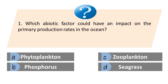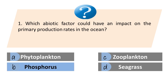Example: Which abiotic factor could have an impact on the primary production rates in the ocean? A. Phytoplankton. B. Phosphorus. C. Zooplankton. D. Seagrass. The answer is B. Phosphorus. The key word in the question is 'abiotic factor.'